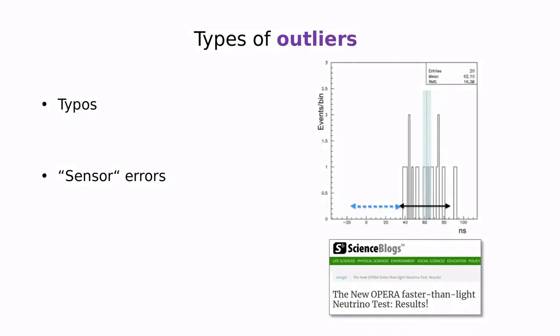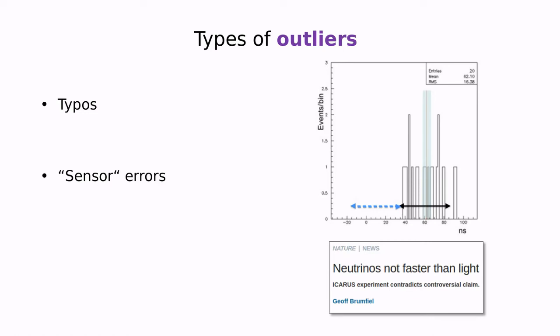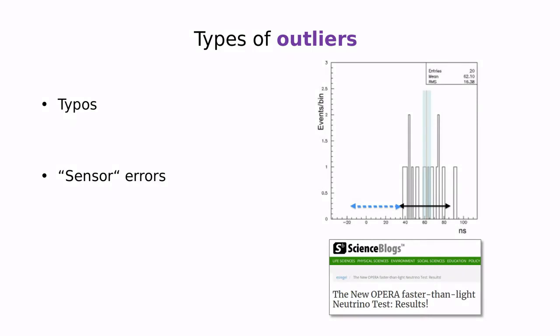We could call the second type of outlier simply a sensor error. This name comes from physics. This is a very famous example, the OPERA experiment in which they tried to measure the velocity of neutrinos. Because of some measurement errors, some outliers that were actually something related to the way in which the data was processed, they concluded that neutrinos could travel faster than the speed of light. According to Einstein's law, that's impossible. This was disproved a few years later in this Icarus experiment. So don't trust your data if a couple of outliers break the laws of physics.